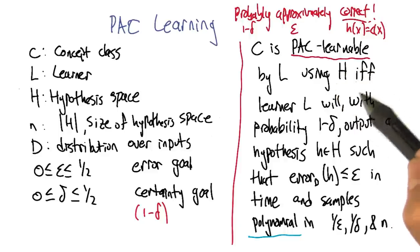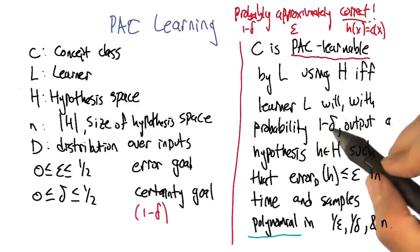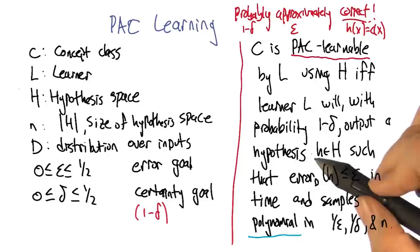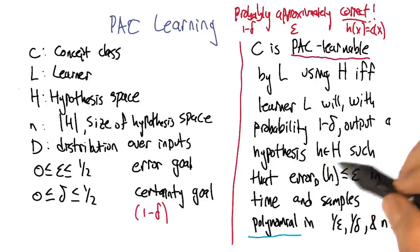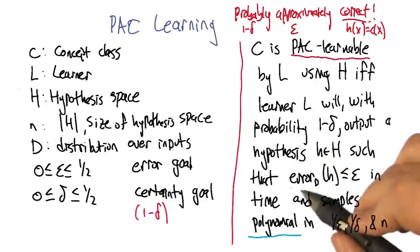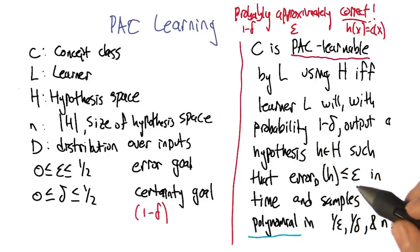If and only if that learner will, with high probability at least one minus delta, output a hypothesis h from its set of hypotheses that has error less than or equal to epsilon, so it's very accurate.